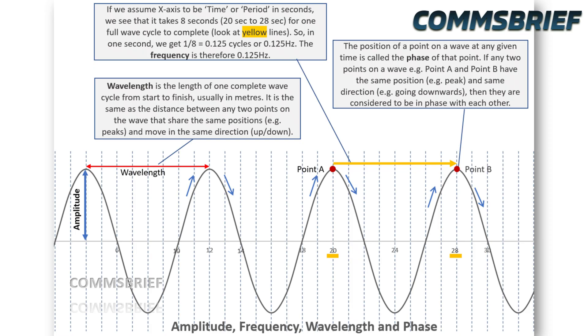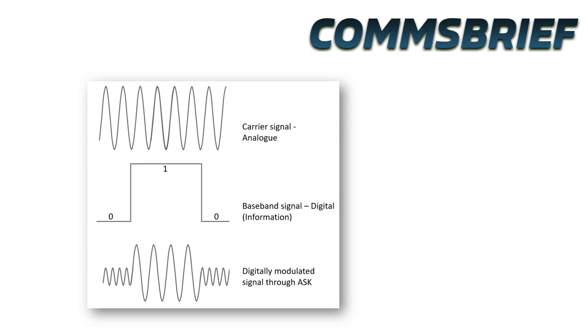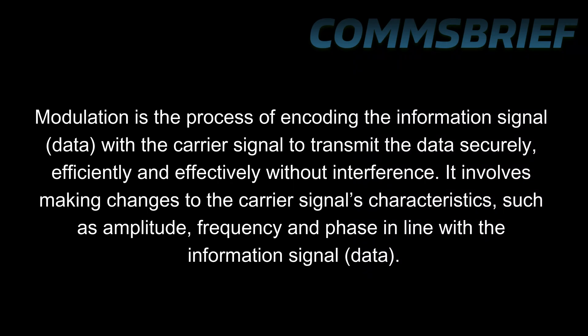The changes a carrier signal goes through relate to any of its characteristics: amplitude (the height), frequency (the number of cycles per second), and phase (the angle or tilt). This waveform example is for amplitude shift keying, or ASK, where the amplitude of the carrier signal has been modified. The term 'shift keying' means digital information has been used to modulate an analog signal. To summarize with the formal definition: modulation is the process of encoding the information signal with the carrier signal to transmit data securely, efficiently, and effectively without interference, by making changes to the carrier signal's amplitude, frequency, and phase.